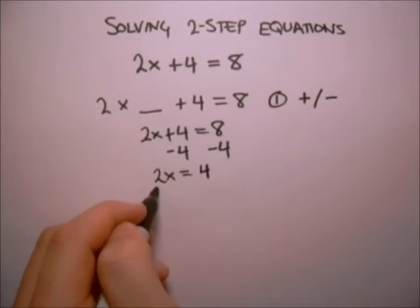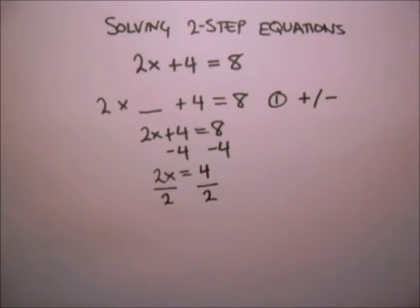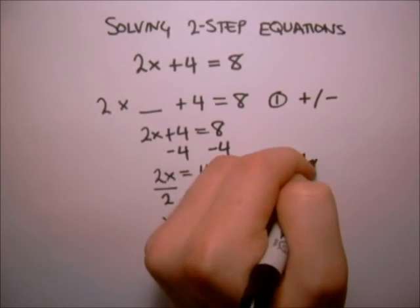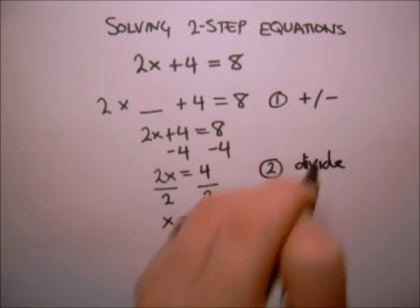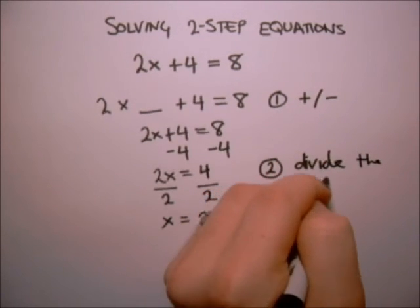Now, we want to divide both sides by whatever is multiplying the x. In this case, the 2. On the left hand side, that leaves us with x. On the right hand side, we get 4 divided by 2, which equals 2. So the second step was to divide by the stuff multiplying x.